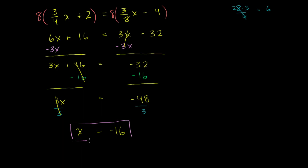x equals negative 16 is our solution. So let's make sure that this actually works by substituting to the original equation up here. And the original equation didn't have those 8's out front. So let's substitute the original equation. We get three-fourths, 3 over 4 times negative 16 plus 2 needs to be equal to three-eighths times negative 16 minus 4.